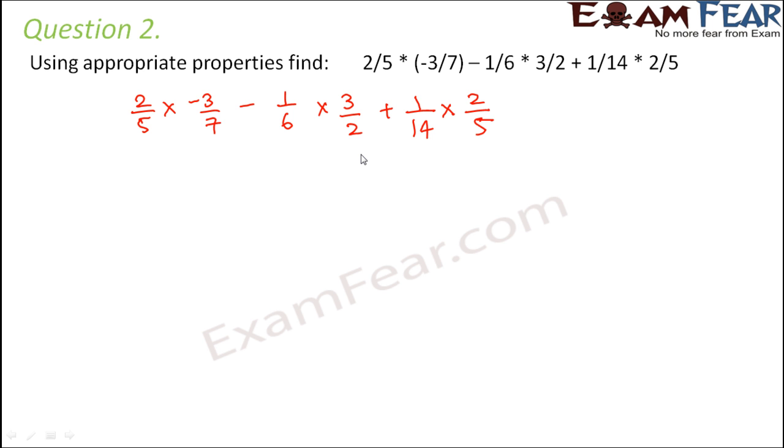So here again you have three terms. This is one term, this is another term, and this is the third term. Where do you see something in common? So 2 by 5 is a common term between the first term and the last term. So let's change the order.